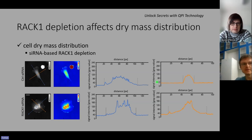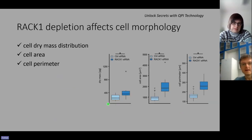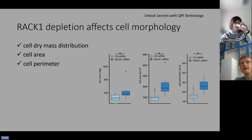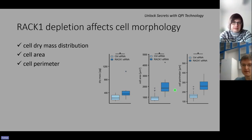After these initial studies, we focused on the RAC1 protein itself and observed that cell dry mass distribution is altered upon its depletion by siRNA technique. Whereas control cells show a typical conical shape with a protruding region and retracting rear, RAC1-depleted cells display rather radial symmetry with a protruding region all around the cell. Further analysis revealed that RAC1-depleted cells possess larger area and perimeter and accumulate more dry mass compared to wild-type or control cells.